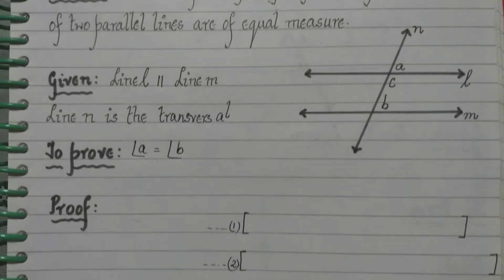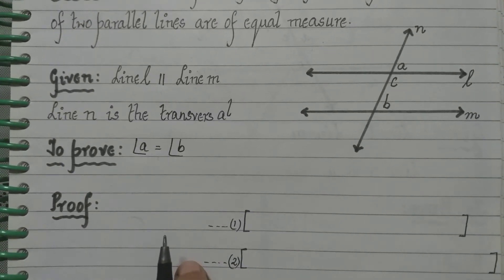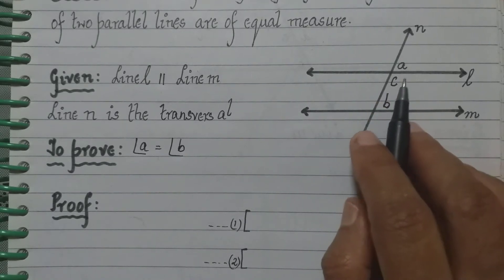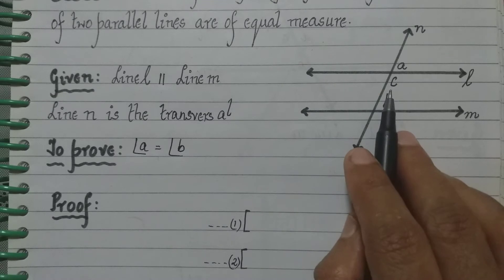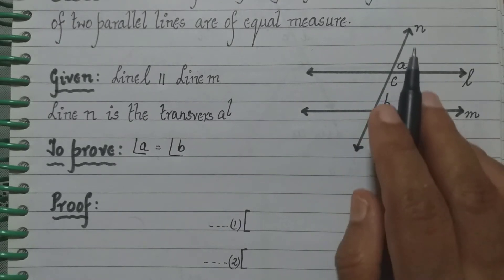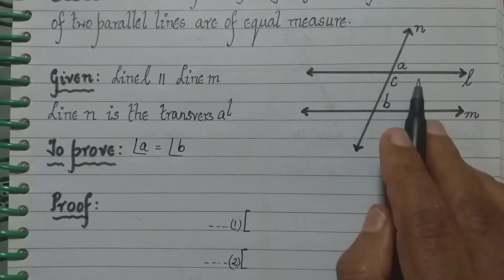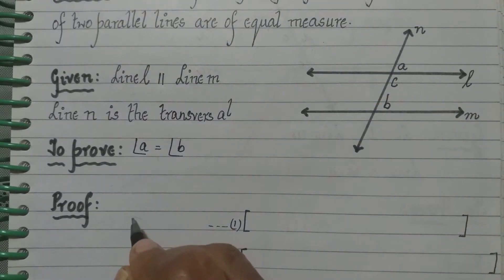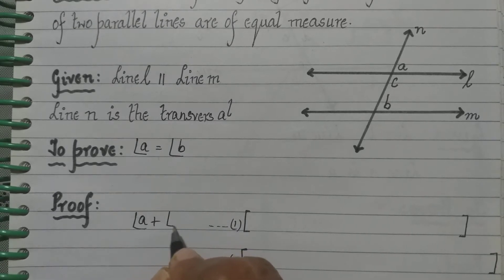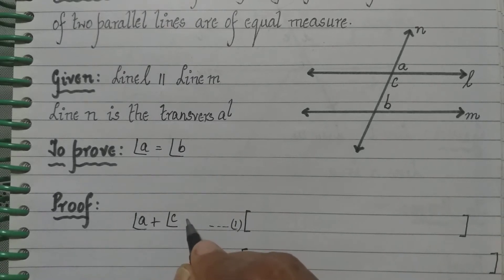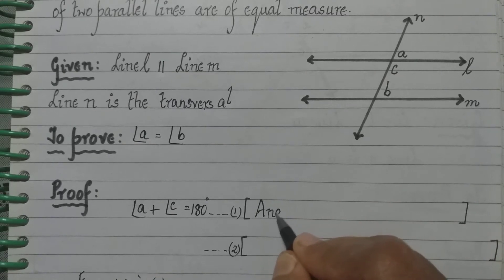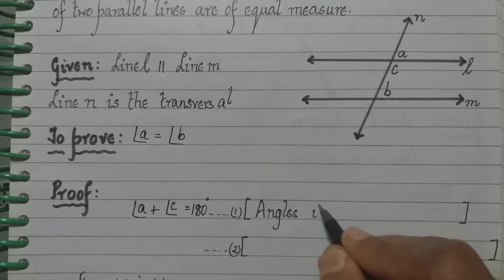Now let me see how I go ahead with the proof. First of all I take the angles in a linear pair. Here I see angle A and angle C form a linear pair, because this angle plus this angle forms a straight line. Therefore they are a linear pair. So I write: angle A plus angle C is equal to 180 degrees. The reason is they are angles in a linear pair.